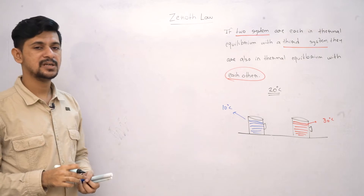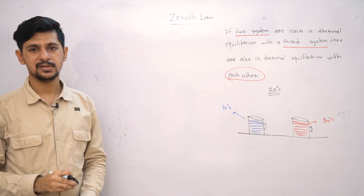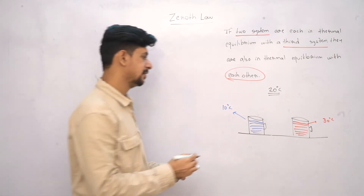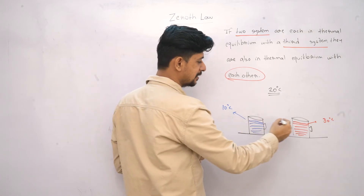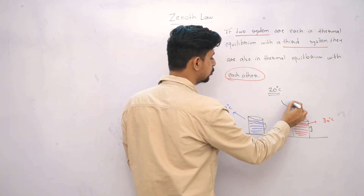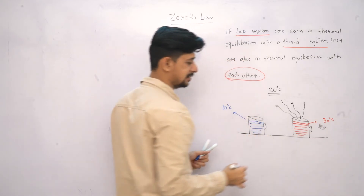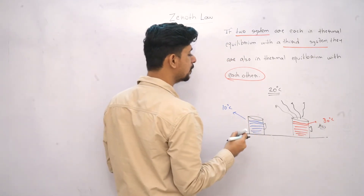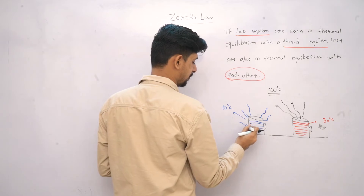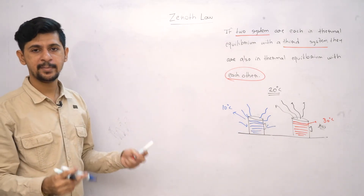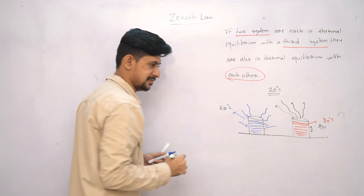Both cups are placed in the same surrounding with a temperature of 20°C. As per thermal equilibrium, heat exchange will take place until equilibrium is achieved. Since the hot cup is at a higher temperature than the surrounding, it will transfer heat energy to the surrounding — losing thermal energy. At the same time, the cold cup is at a lower temperature than the surrounding, so it will continuously gain heat energy from the surrounding.